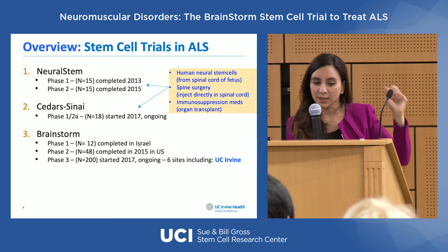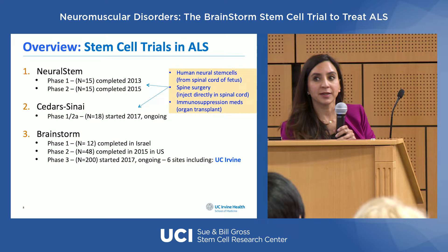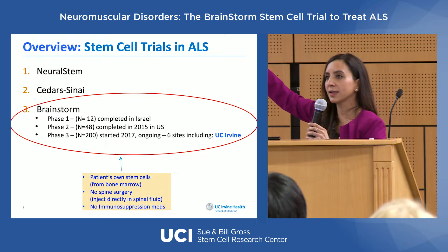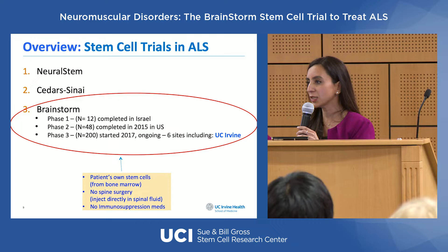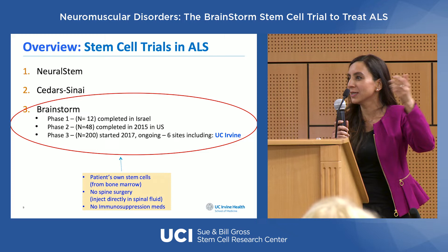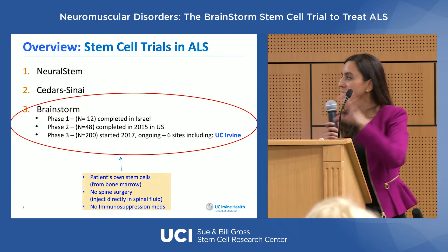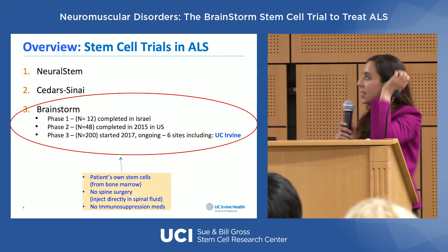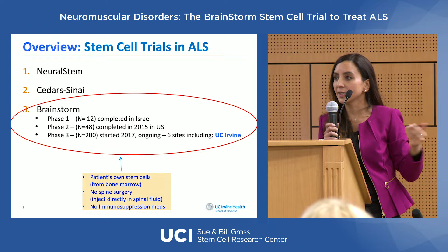I want to focus on the BrainStorm trial, which we are doing right here at UC Irvine and which has been the furthest along in stem cell therapy for ALS patients. Phase one means the trial is being done first in humans purely to assess safety — are we giving a drug that's going to cause harm, are we going to grow tumors? The FDA requires a safety analysis in the smallest number of patients. In the phase one study, 12 patients were enrolled and it was deemed safe to proceed.